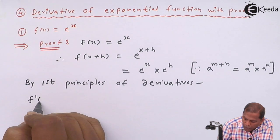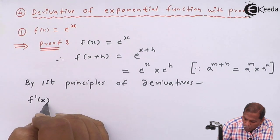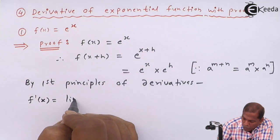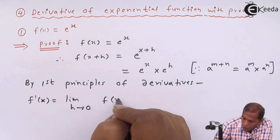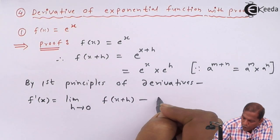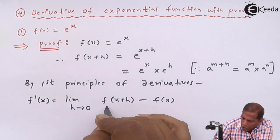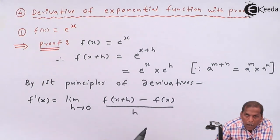f dash x is equal to limit h tends to zero, f of x plus h minus f x upon h.